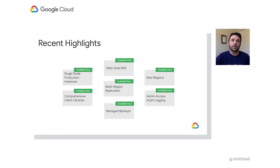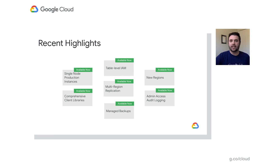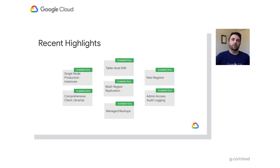Earlier this year in 2020, we also announced single-node production instances. So historically with Cloud Bigtable, you were required to have three nodes to be supported by the service level agreement. Now you can have a single node supported by the same SLA that gives you 99.9% availability for single cluster routing or 99.99% availability for multi-cluster routing. Something I'm really excited about that we're just announcing now in July 2020 is the addition of managed backups, which gives you a fully automated method to back up tables within your cluster and then very quickly restore them into the same instance or into a development or QA cluster for ease of testing.